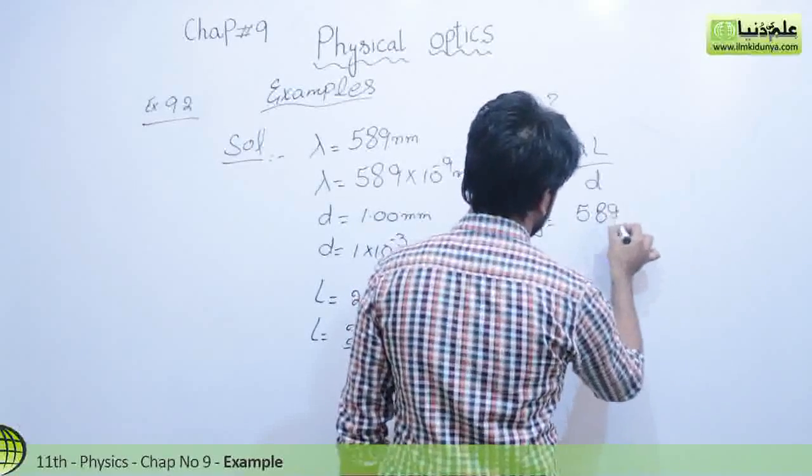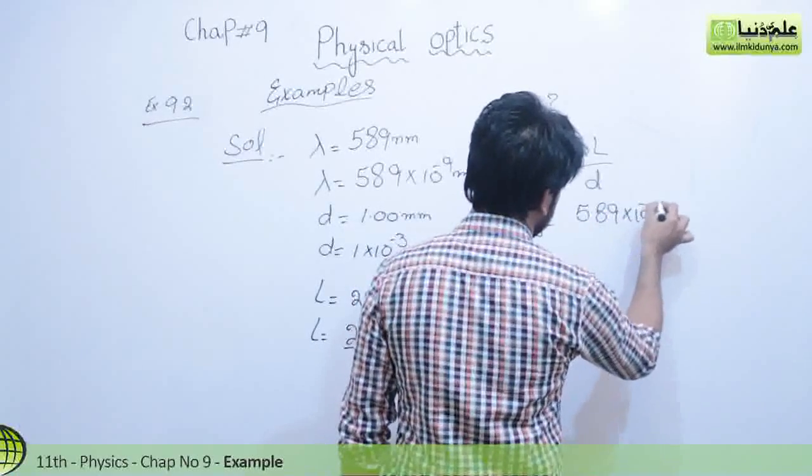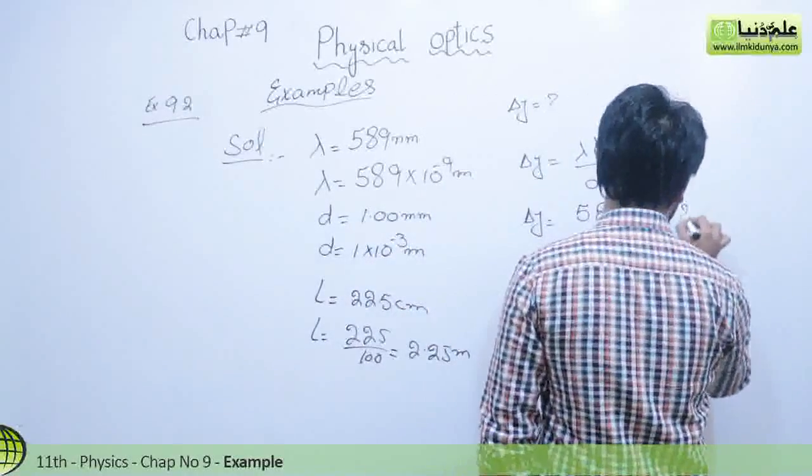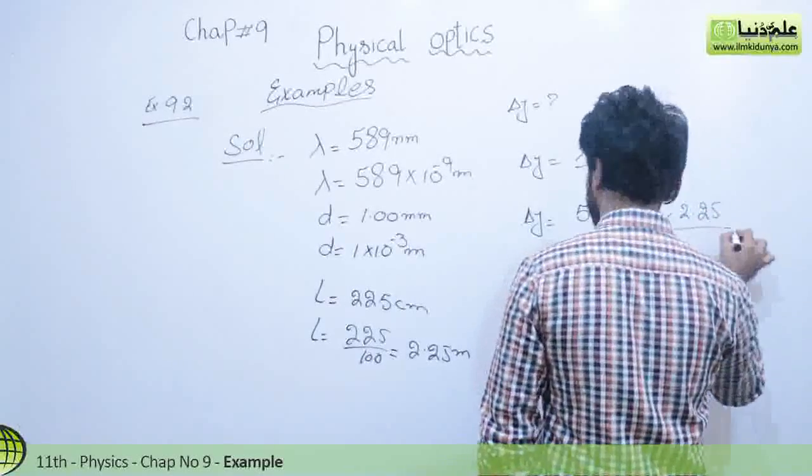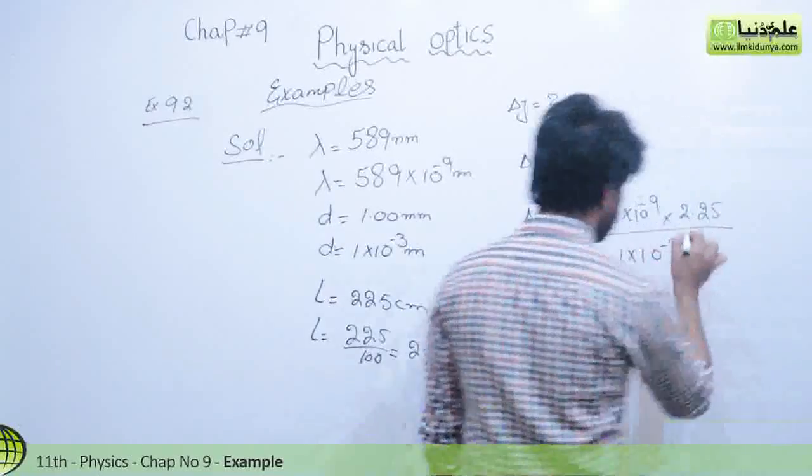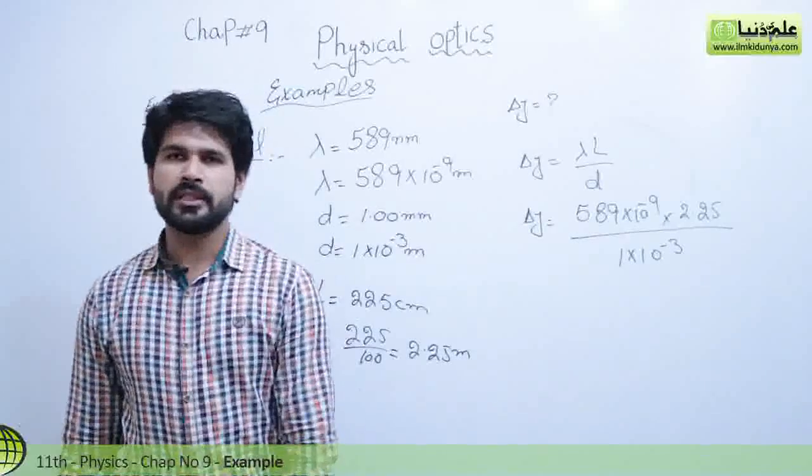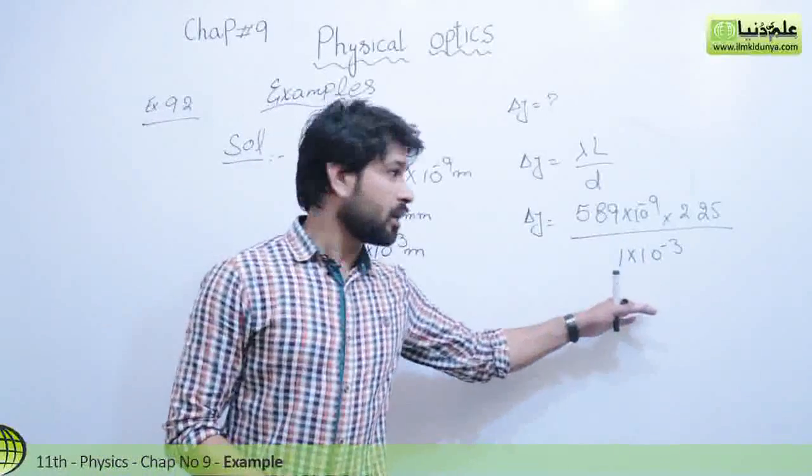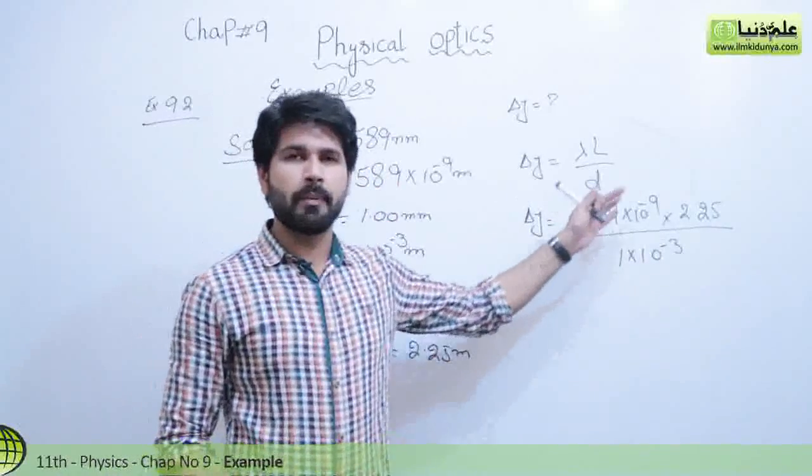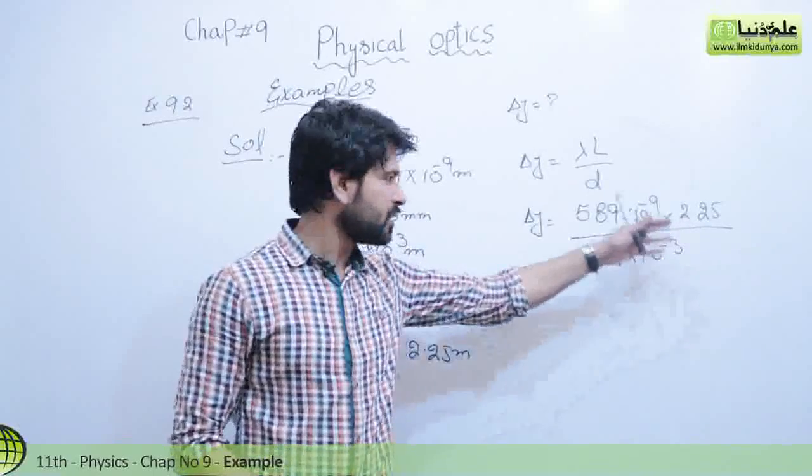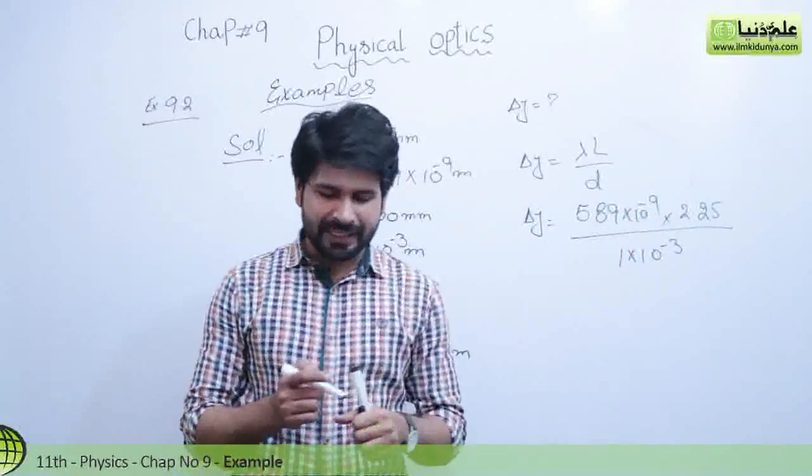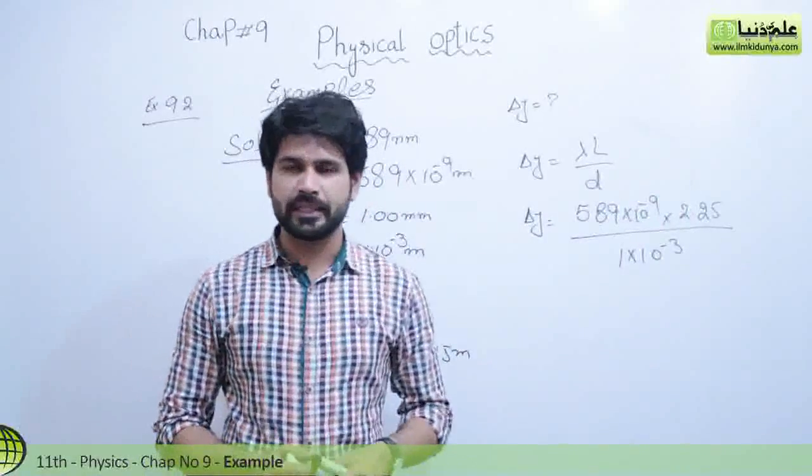589 times 10 raised to the power minus 9, multiply by 2.25, divided by 1 into 10 raised to the power minus 3. You can solve this by using a calculator. We will just multiply the numerator terms, then you will have a single term. Then you can divide that single numerator by denominator 1 into 10 raised to the power minus 3.